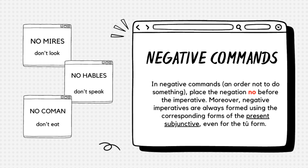You'll notice that in the tú form there was a no hables or no coma — those are negative commands. The negative commands — in order to not do something — place the negation "no" before the imperative. Moreover, negative imperatives are always formed using the corresponding forms of the present subjunctive, even for the tú form.